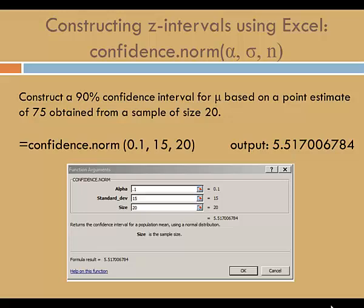To construct a z interval in Excel, we'll use the confidence.norm function. The arguments are alpha, sigma, and n.